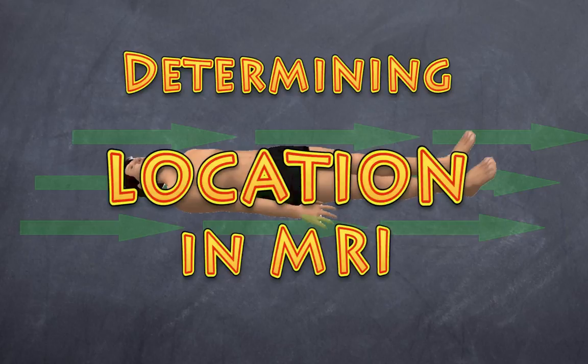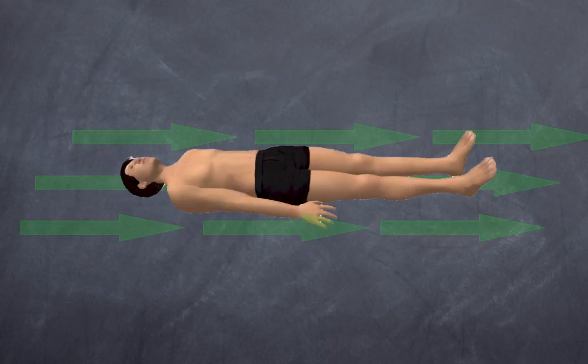If you remember from the beginning, our body is aligned in a strong magnetic field, and that strong magnetic field determines the precession of your hydrogen atoms as they align. The frequency, the Larmor frequency, is determined by the gyromagnetic ratio times the magnetic field over 2 pi.